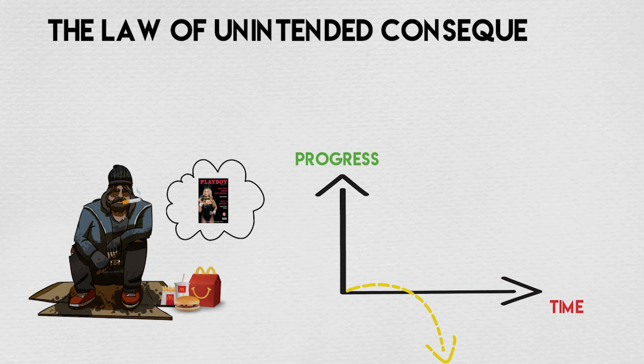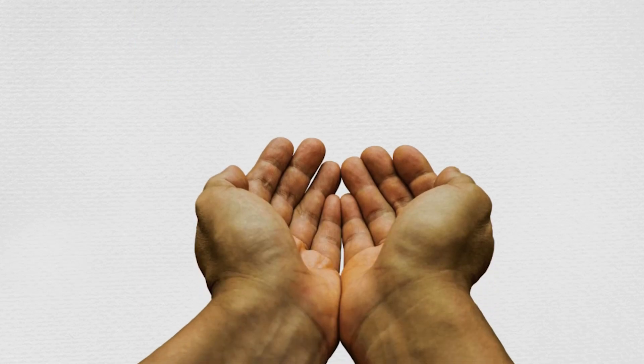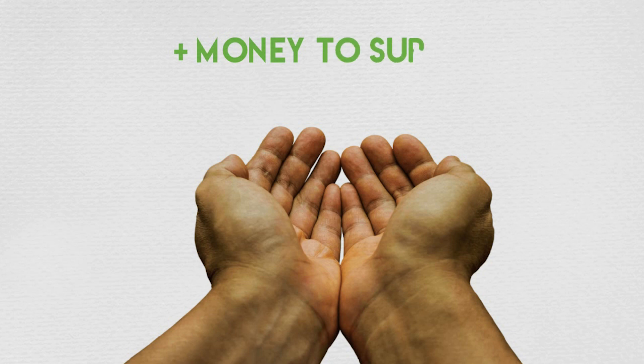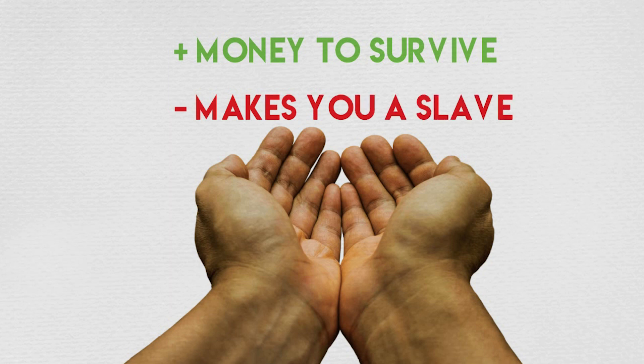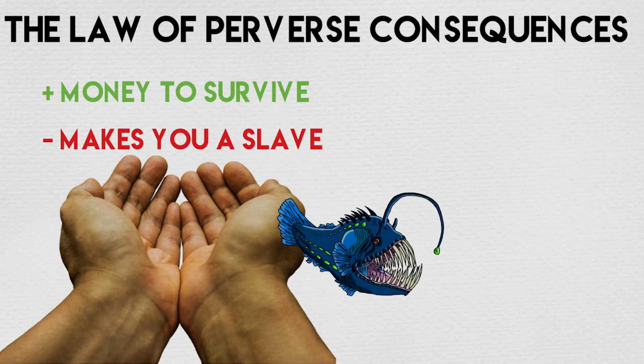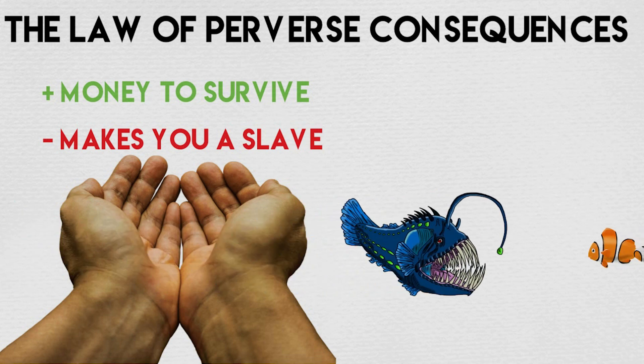His daily decisions revolve around pleasure in the now at the expense of fulfillment in the future. This is called the law of unintended consequences. To him, begging seems like the right thing to do because it gives him money to survive. However, when he does it for long enough with no other plan of escape, it makes him a slave. This is called the law of perverse consequences - when something seems good but ends up being really bad for us.